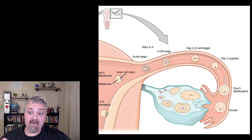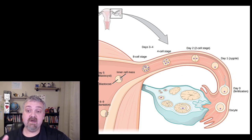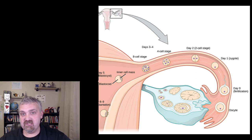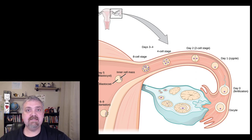If that doesn't happen — if the oocyte doesn't come into contact with the sperm and isn't fertilized — the oocyte will just degrade and break down, and it will be shed with the next menstrual cycle.